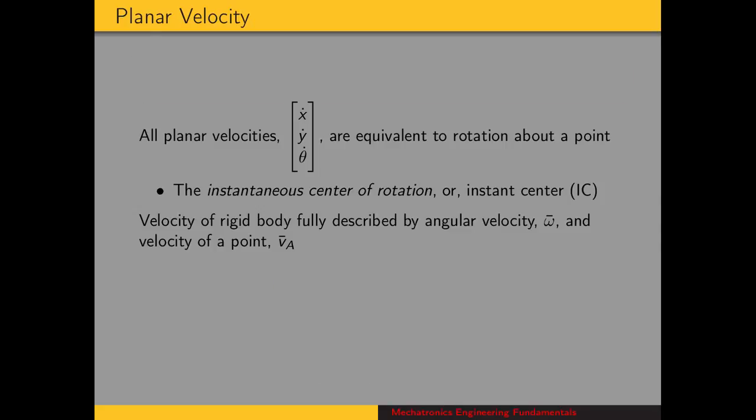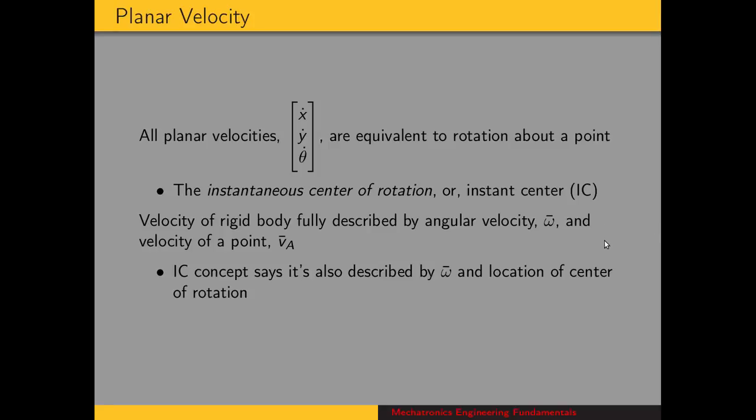We already know that the velocity of a rigid body is fully described by its angular velocity and the velocity of one point on the body, which we'll call point A. The instant center concept says that it's equivalently described, at least in the plane, by angular velocity omega — where in the plane the direction is always perpendicular to the plane, so it's effectively a scalar — and the location of the center of rotation. That center of rotation doesn't necessarily have to be on the body; it's just a point where, if the body were extended, that point would have zero velocity.